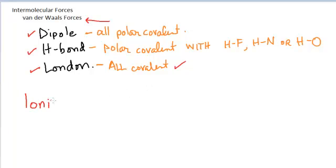All samples are going to have London forces. If you are talking about an ionic substance, these forces are not the forces we deal with in terms of melting something. In order for a gaseous substance to become a liquid — liquid to gas is boiling, gas to liquid is condensing. If you're talking about a solid going to a liquid, that would be melting, or a liquid going to a solid, we're talking about crystallization. In an ionic compound, dipole, hydrogen bonding, and London forces are not what you're talking about.